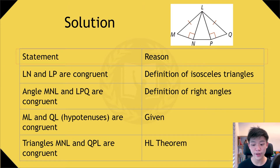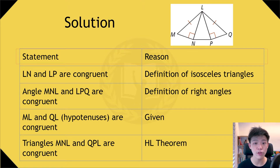This is because of the HL theorem. It states that if one leg and one hypotenuse of a right triangle is congruent to another, then they are congruent. We proved that LN and LP are congruent, and LM and LQ are congruent, which satisfies both the requirement for hypotenuse and a leg.